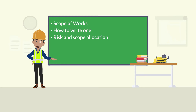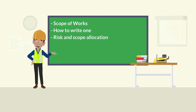This short video is an extract of our course on construction procurement management, where we will take you through how to write a scope of works to engage a subcontractor and get quotes. We'll talk about what a scope of works is, what it contains, how to write one, and how to make important scope and risk allocation decisions. If you find this video interesting and useful, check out the link in the description below to our complete Udemy course.